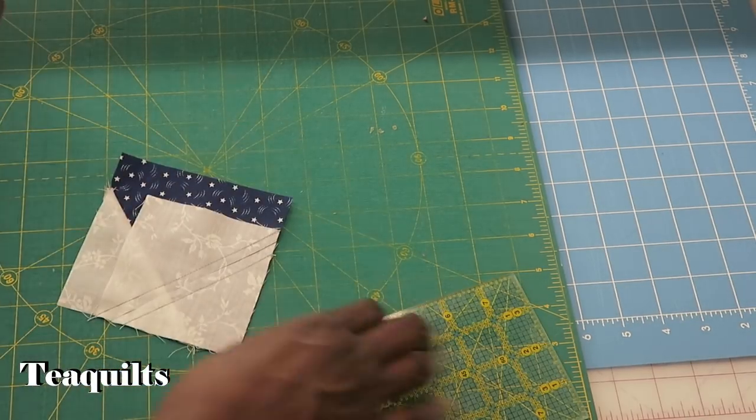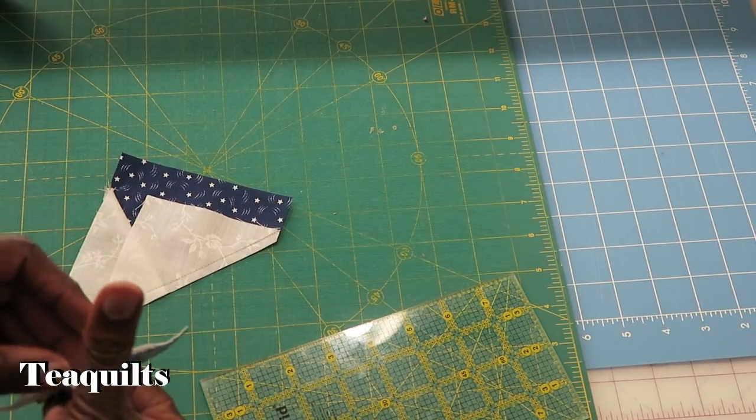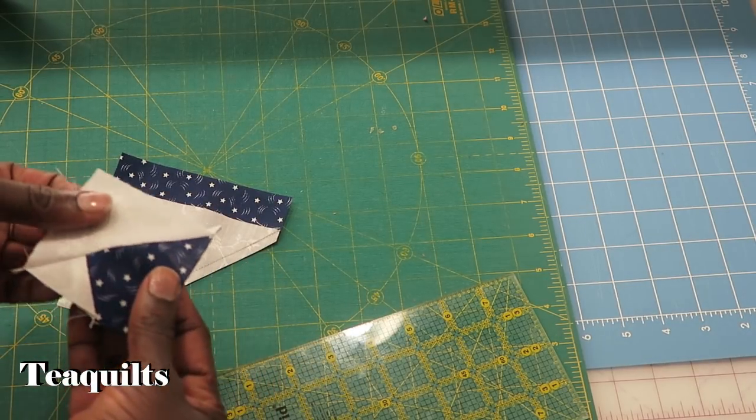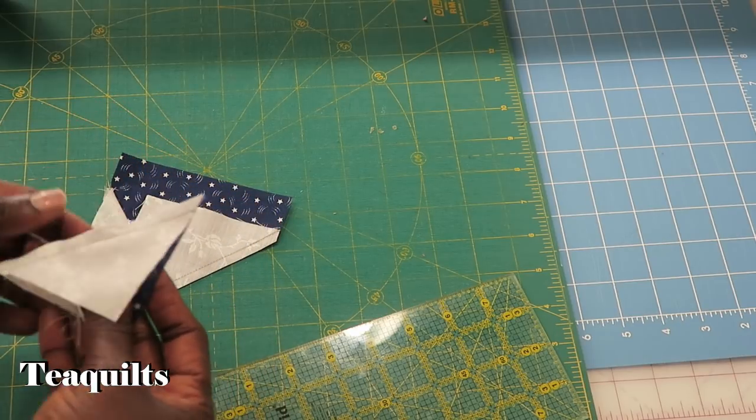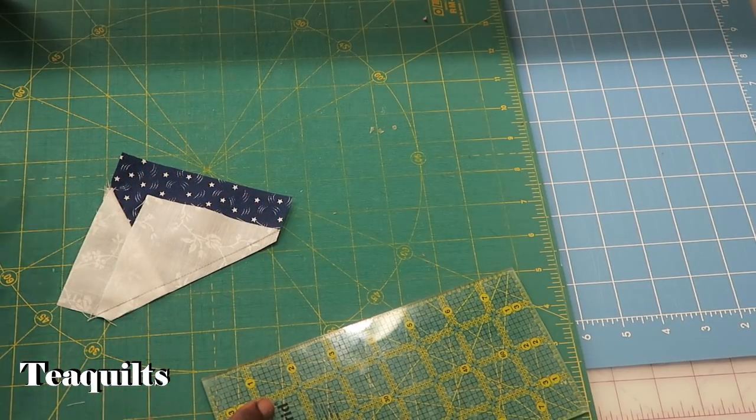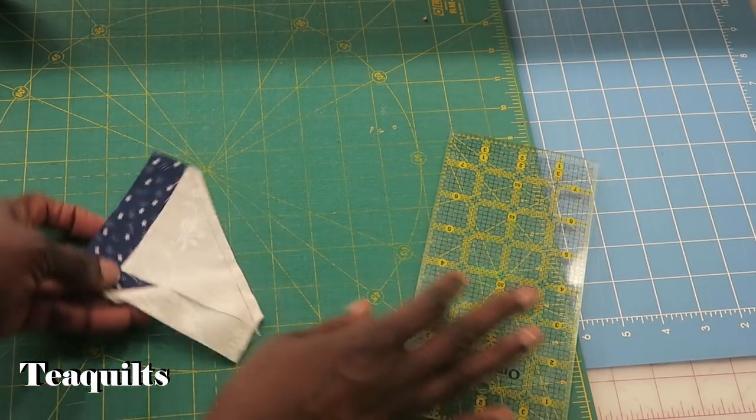Once you've done your stitching again, then we're going to go ahead and trim again right through the middle. And this time we've got a weird little extra half square triangle, but that's okay. It's still something that can be used in a crumb quilt or a crazy quilt.